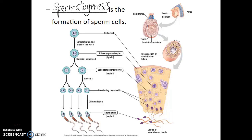In this way, each primary spermatocyte will end up resulting in four sperm cells capable of fertilizing an egg. Hundreds of millions of sperm are produced each day from puberty through the rest of the male's life. This production of sperm is optimized at temperatures below core body temperature, which is why the testes are external structures.